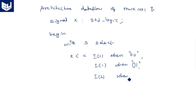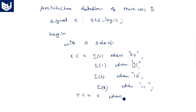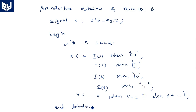Continuing the with-select: I(2) when "10", I(3) when "11". Then Y is assigned based on enable: when enable equals 1, Y equals X; otherwise Y equals '0'. End data flow. This completes the 4 by 1 multiplexer VHDL data flow model. The selection line S chooses the appropriate input, and enable controls whether the output is active or zero.